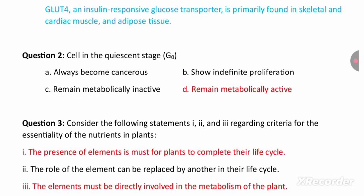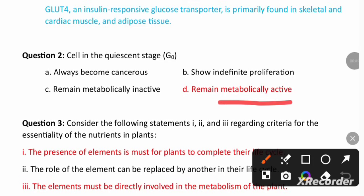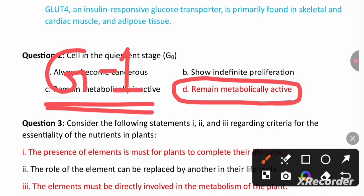Cell in the quiescent stage: cells in the quiescent stage metabolically remain active but do not proliferate. Cells exit after the G1 phase of mitosis. They do not proliferate but they are metabolically active.